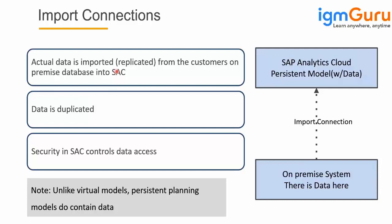When it comes to import connections, actual data is replicated. Contrary to live connections, here we copy the data from the customer system into the SAC server — into SAC's HANA database. So the data is literally duplicated, and security also has to be defined. All tables, views, etc., are stored in SAC, and you need to recreate security restrictions. For example, if you created a sales table with five people having read access, you need to create that same security restriction again in the import scenario.